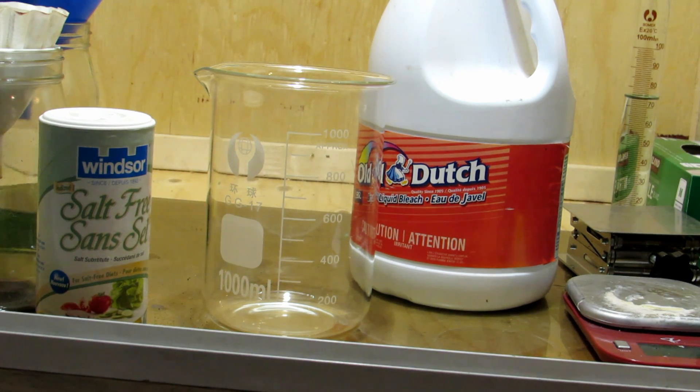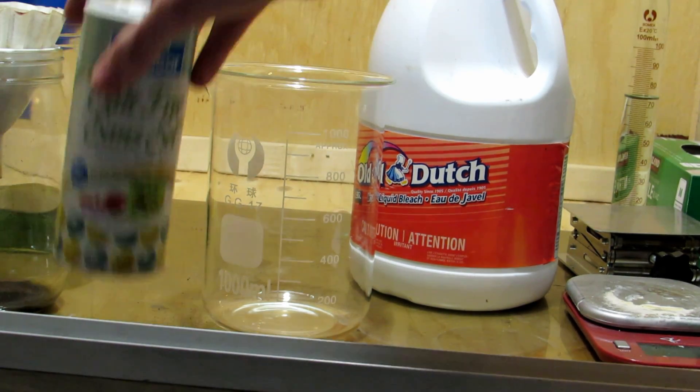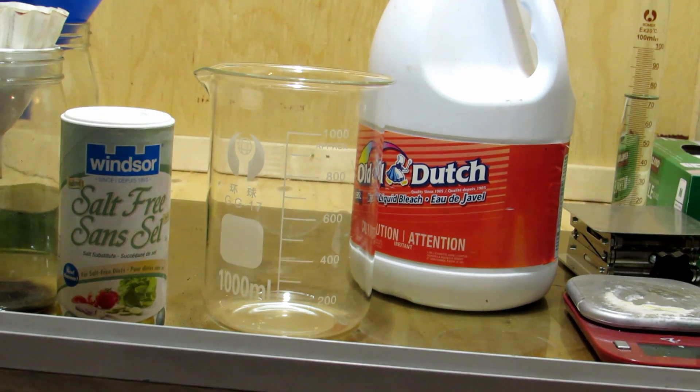So instead, today we're actually going to be making it from bleach. Typical bleach contains calcium hypochlorite or sodium hypochlorite. By boiling it down, we can turn it into calcium or sodium chlorate. By doing a double displacement reaction with potassium chloride, you can actually form potassium chlorate.